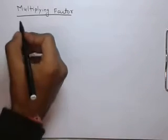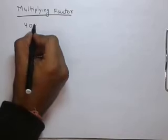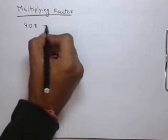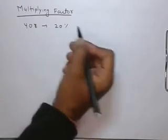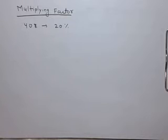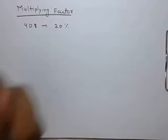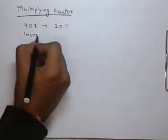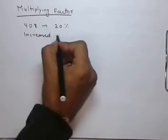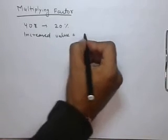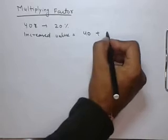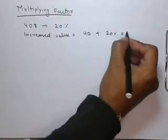Like, if 40 is increased by 20%, then what would be the increased value? The increased value equals to 40 plus 20% of 40.